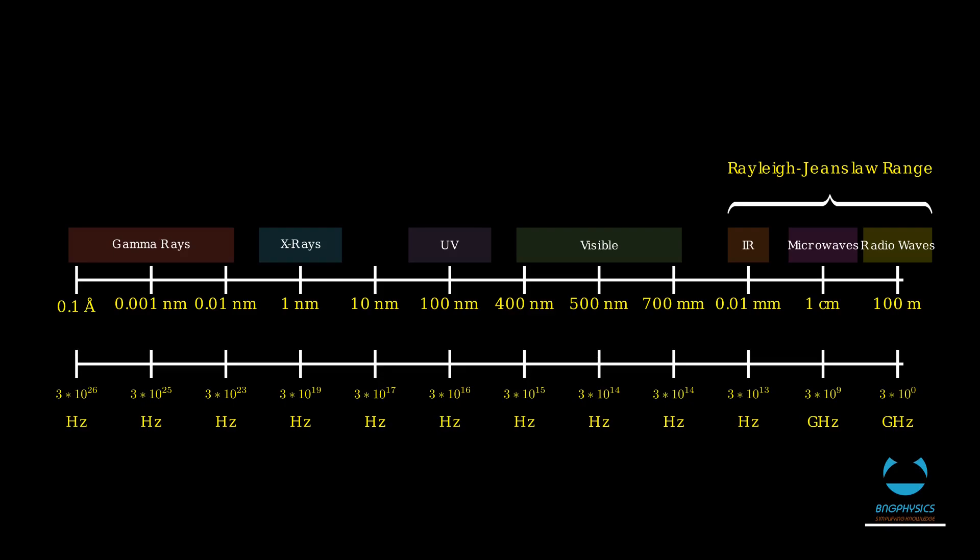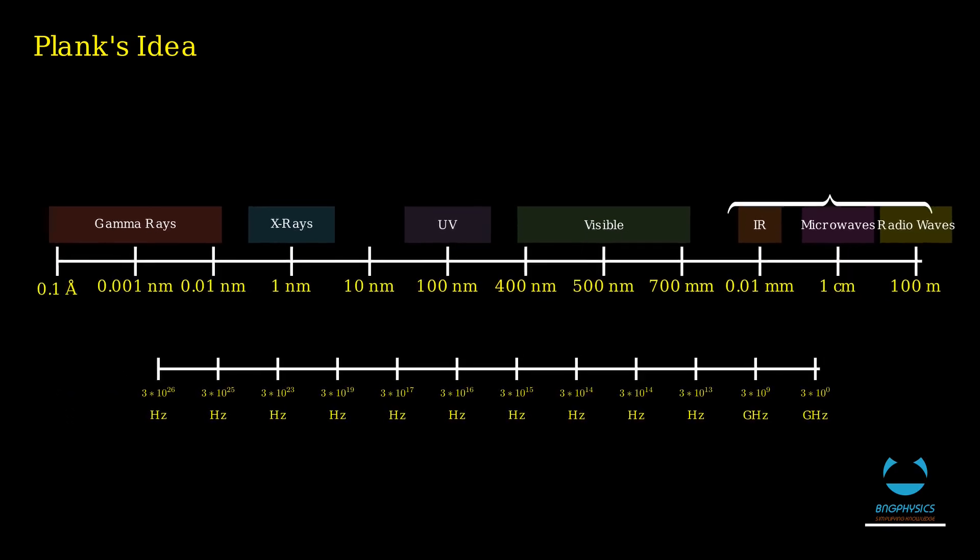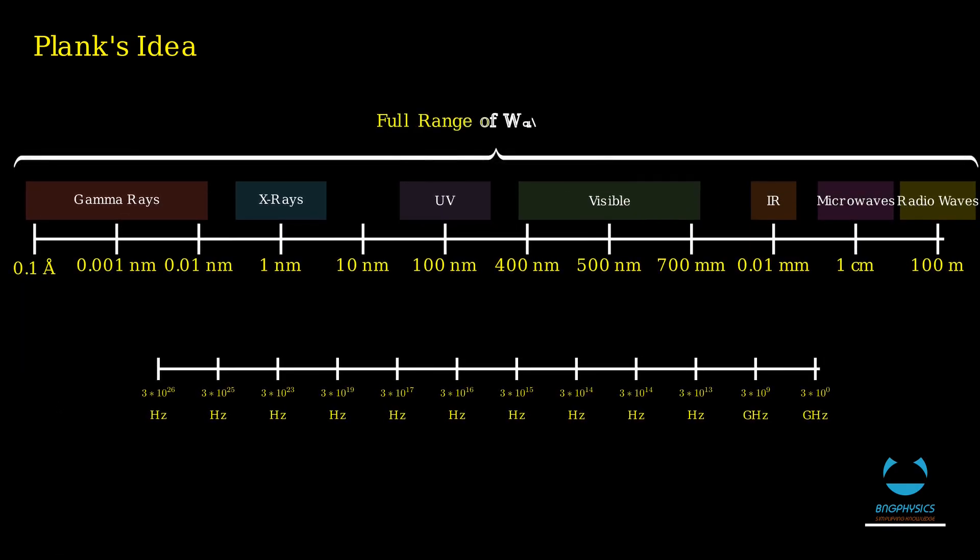Rayleigh-Jeans law was only able to predict intensity of radiation of larger wavelengths with results matching experimental data. But when it came to radiation of shorter wavelengths, it failed. So Planck searched for a theory that accurately describes radiation emitted by a black body across all wavelengths, from gamma rays to radio waves.